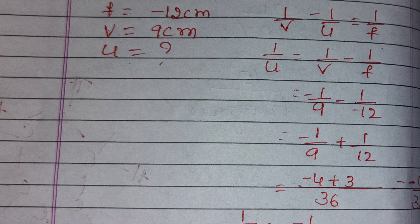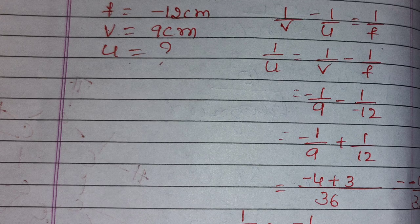Therefore minus into minus plus, so minus 1 by 9 plus 1 by 12. Take LCM, 36 will be the LCM. Minus 4 plus 3 divided by 36, so minus 1 by 36.